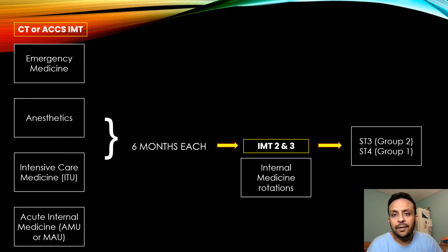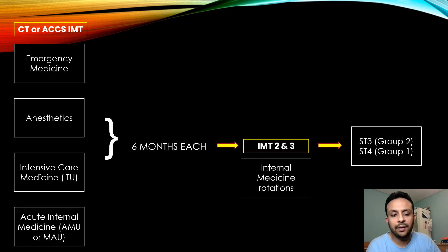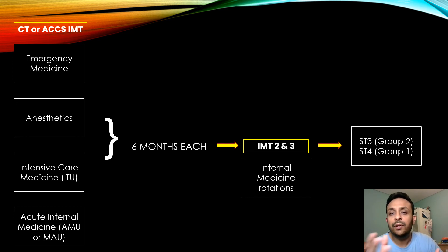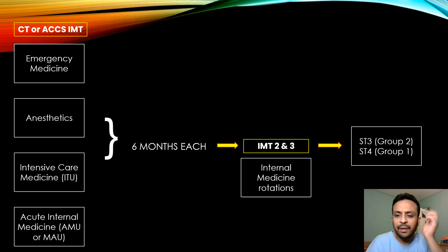For the training distribution in ACCS internal medicine, you do six months each in four specialties: emergency medicine, anesthetics, ITU, and acute internal medicine. Once you finish those two years, you start as IMT2, then IMT3. Depending on your goals, if you want group two specialties you can apply after IMT2; if you want group one specialties, you complete IMT3 and then step up as ST4. There are separate videos on the channel covering group one and group two specialties for further reference.